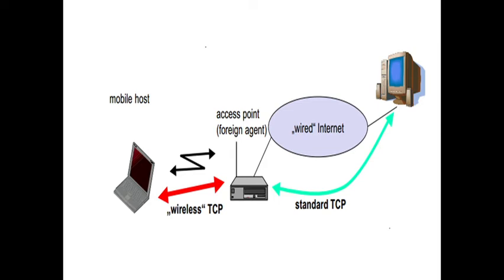Indirect TCP requires several actions as soon as handover takes place. If the mobile host moves to another location — a foreign location — it becomes a problem for the access point to transmit the packet. Not only do packets have to be redirected, but every socket, proxy, addresses, and ports have to be redirected as well. Everything has to be buffered. The access point acts as a proxy and buffers packets for retransmission if the mobile host moves to the foreign network.